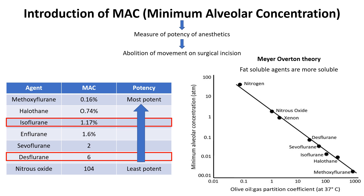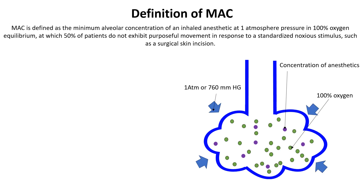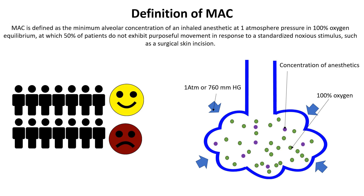In essence, anesthetics with higher oil-gas partition coefficients tend to have lower MAC values because they are more potent at lower alveolar concentrations. For example, isoflurane with an oil-gas partition coefficient of 99 and a MAC of 1.17% is more potent than desflurane, which has an oil-gas partition coefficient of 18.7 and a MAC of 6%. MAC is defined as the minimum alveolar concentration of an inhaled anesthetic at 1 atmosphere pressure in 100% oxygen equilibrium, at which 50% of patients do not exhibit purposeful movement in response to a standardized noxious stimulus, such as a surgical skin incision. We will dissect this definition to understand the concept of MAC in detail.